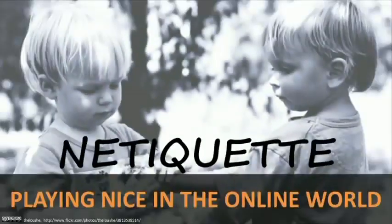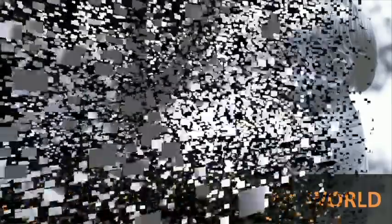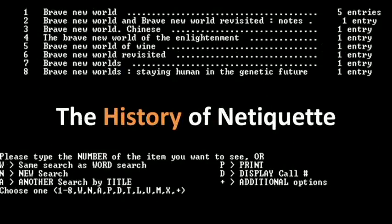Think of netiquette as the golden rule of the Internet. With millions of people all living, working, and playing in the same virtual space with little or no nonverbal cues available, it's important that everyone play nice on the web. Netiquette actually began before the World Wide Web as we know it today. People using Telnet and Usenet, which were precursors to the web, set up rules for text-based communications. There are netiquette rules set up by many different online communities, and so there are variations, but here are some of the basic rules for how to interact online.